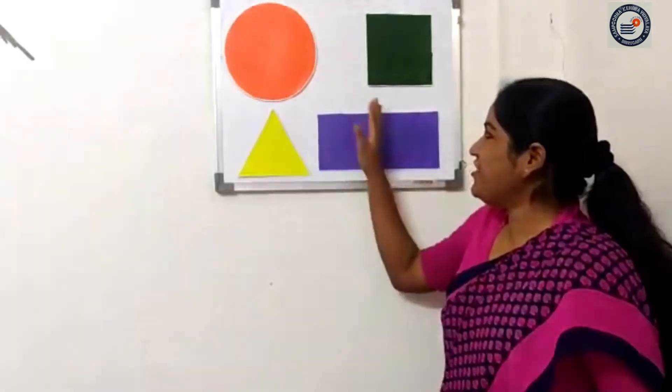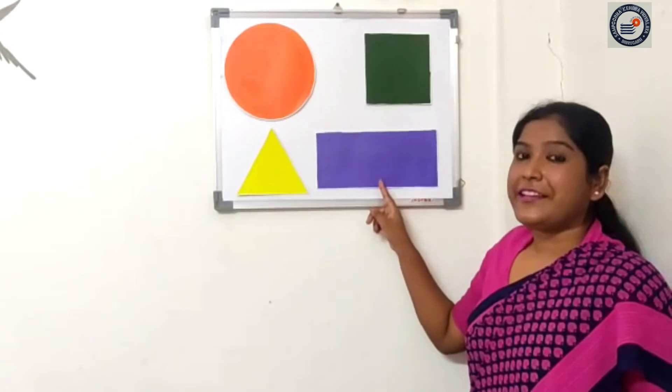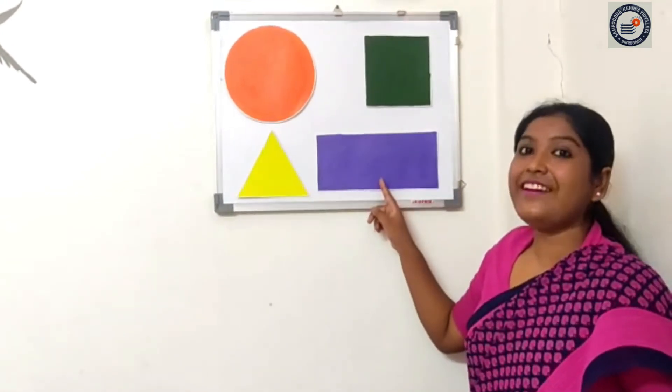Now again I will count from one to ten. One, two, three, four, five, six, seven, eight, nine, and ten. So children, I hope you all are ready with the last shape. What is this shape, children? This is a rectangle. It has two big sides and two small sides.